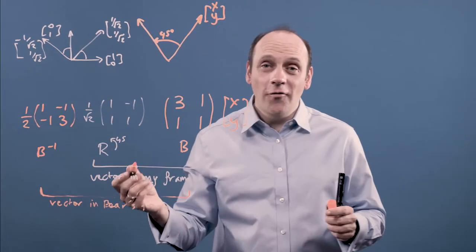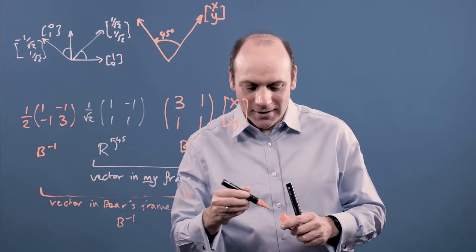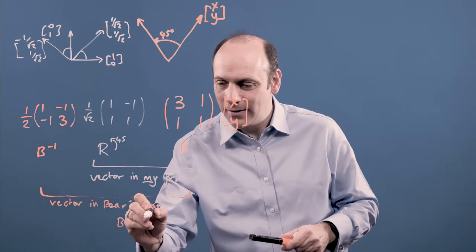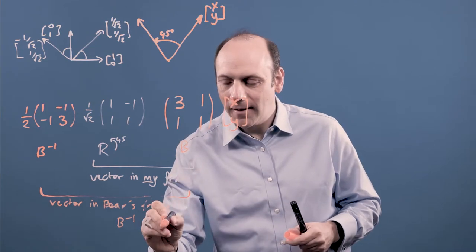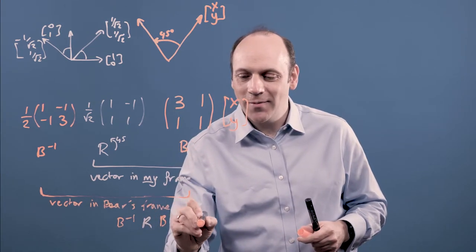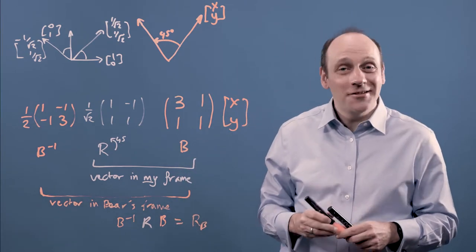So overall, what I've done is I've done B to the minus 1 times R times B. And what that's giving me is it's giving me the rotation in Bear's coordinate system, which is really neat.